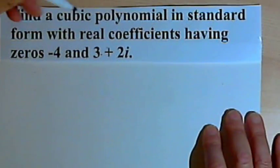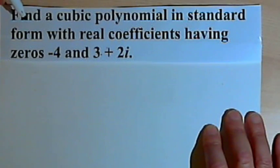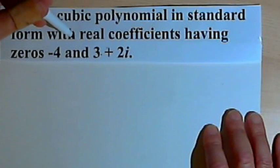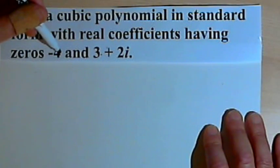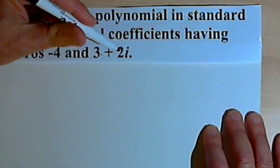So here's how you typically see it in problems. You might get a problem that says something like this: Find a cubic polynomial in standard form with real coefficients having zeros negative 4 and 3 plus 2i.